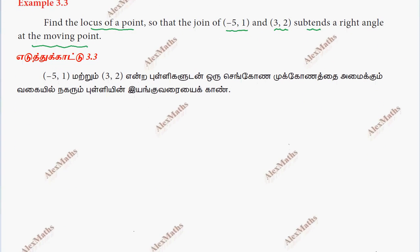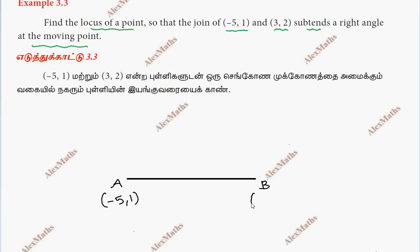So we have two points: point A with coordinates (-5, 1) and point B with coordinates (3, 2). The locus of a point will be moved according to the given condition — subtends a right angle.